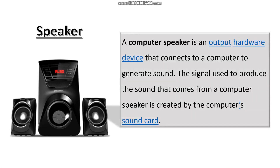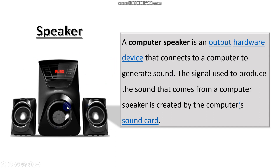Next, as an output device, we have speakers. A computer speaker is an output hardware device that connects to a computer to generate sound. In some computer systems, there is a small speaker inside the CPU, but normally we prefer bigger external speakers. The signal used to produce the sound comes from the computer's sound card.